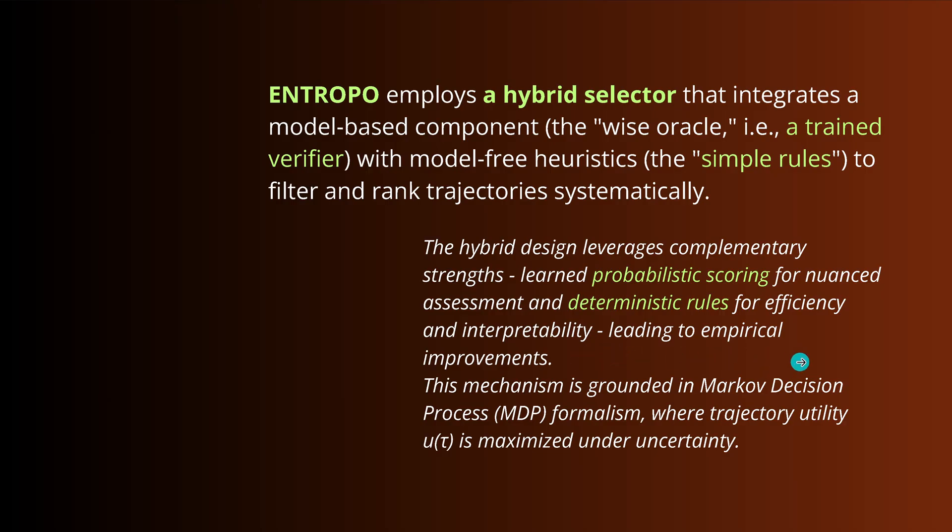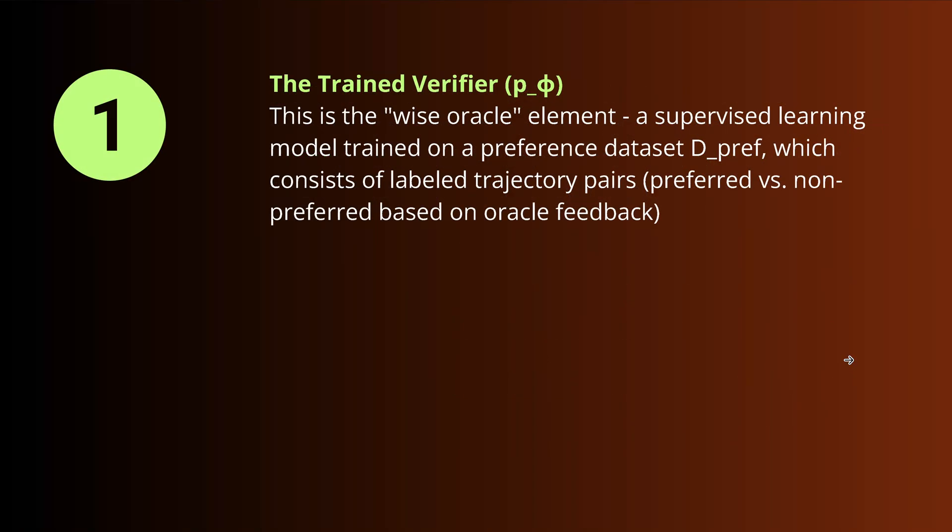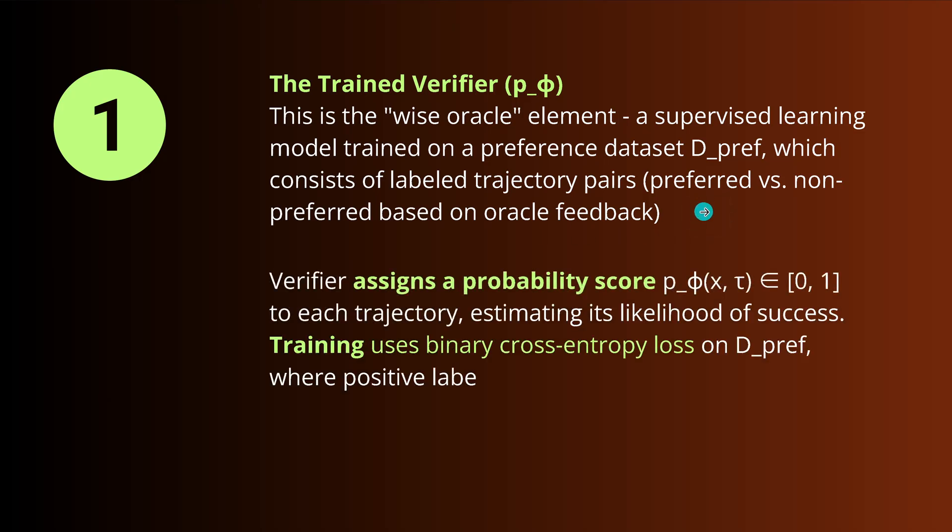Yes, of course, we go with Markov decision process. And you know exactly why if you have seen my last videos. Now, this particular process for Anthropo is interesting. But at first, we have this trained AI. If you want this device Oracle element, a supervised learning model trained on a preference data set, which consists of labeled trajectory pairs. So we go with preferred versus non-preferred for the Oracle feedback, something you know, absolutely no problem standard procedure. This verifier assigns, of course, standard probability score in whatever interval you like to each trajectory to our 16 trajectories, thereby estimating a likelihood of success.